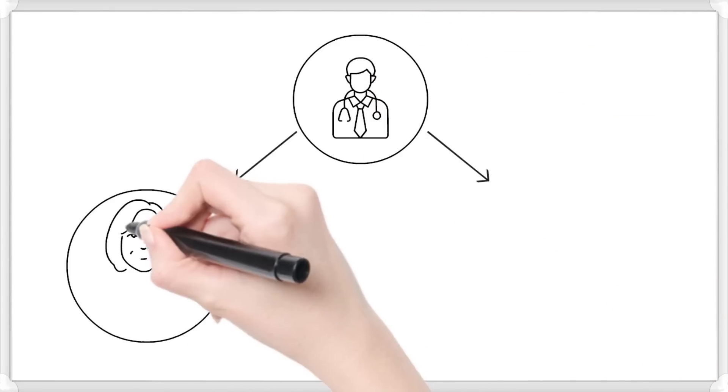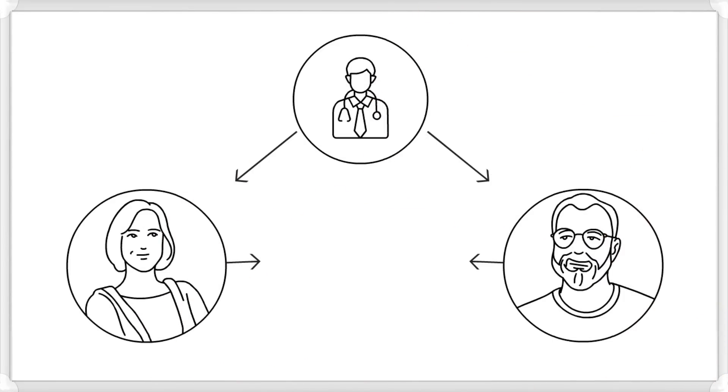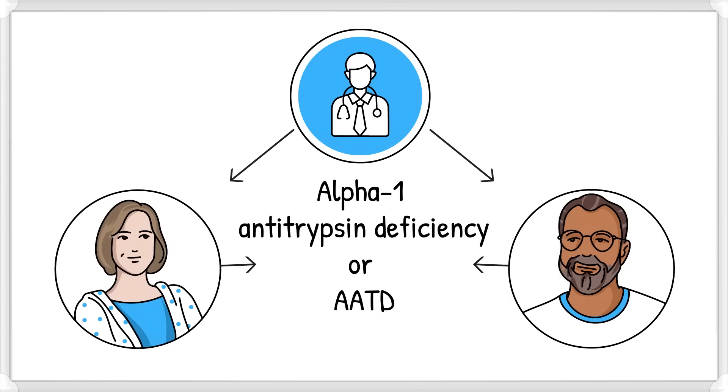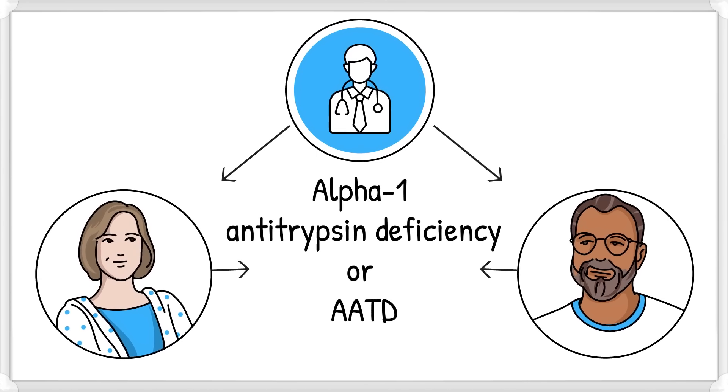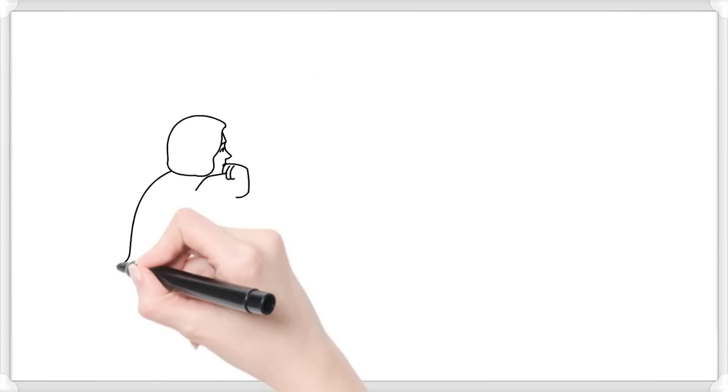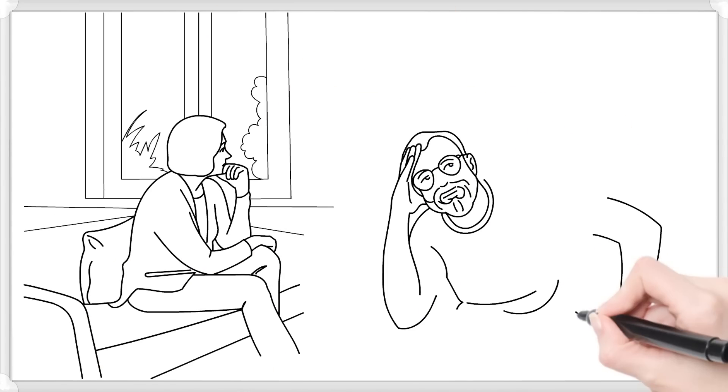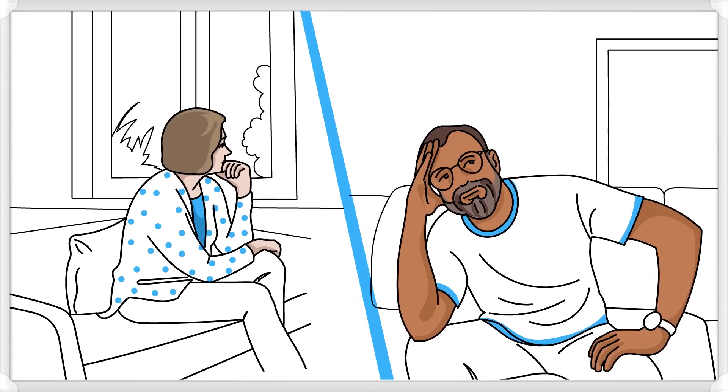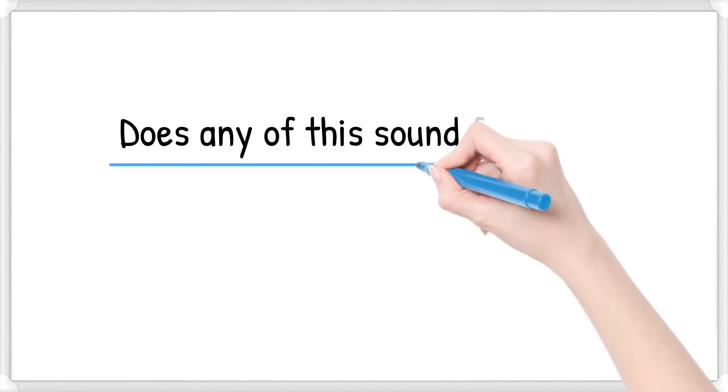After seeing a doctor, Laura and Jose learned they may need to be tested for alpha-1 antitrypsin deficiency, or AATD, a rare genetic condition. They came home feeling confused and worried. Their doctor didn't have all the answers they needed. Does any of this sound familiar?